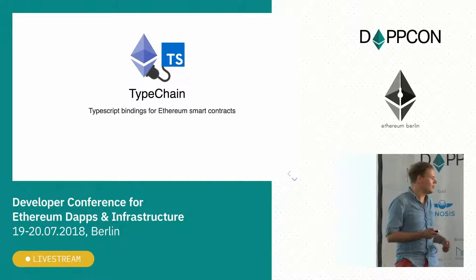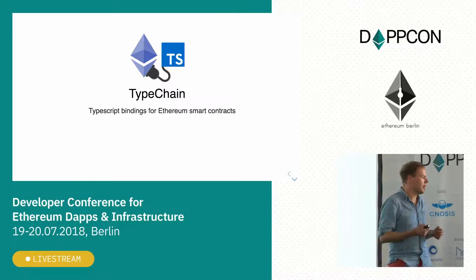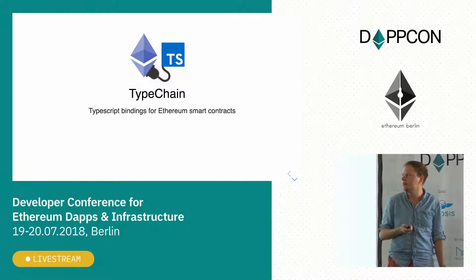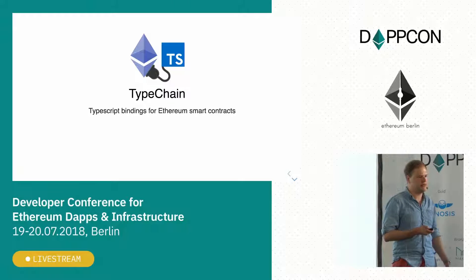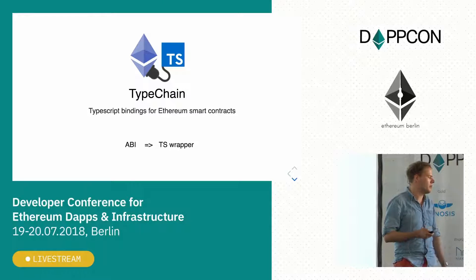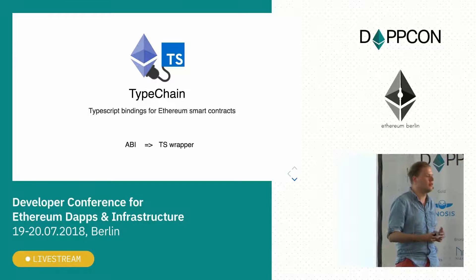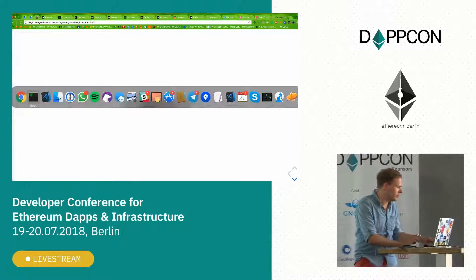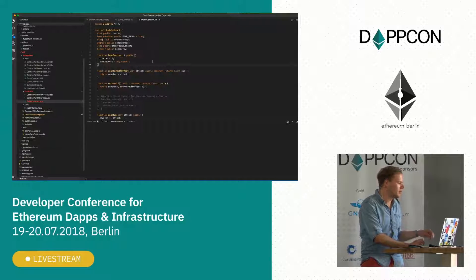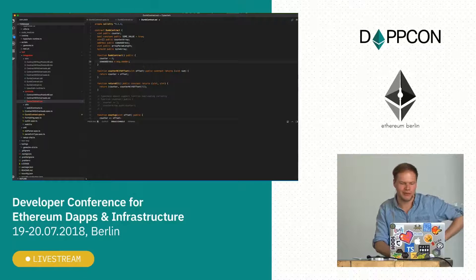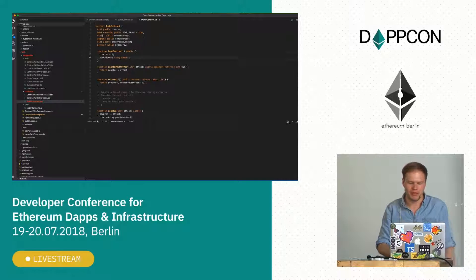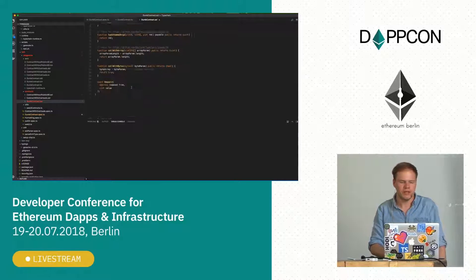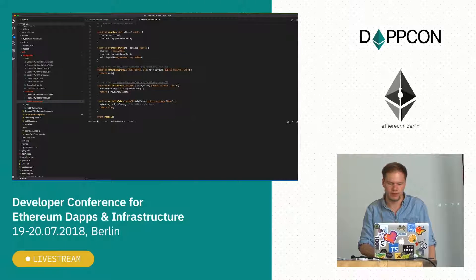Enter TypeChain. TypeChain solves all these problems by generating typed wrappers based on ABI definitions. It takes an ABI, generates a TypeScript wrapper, and this happens as a separate build step — you would normally do it before the compilation step. So imagine we have a smart contract named DumbContract because it doesn't do anything — we have a bunch of methods, events, and transactions.